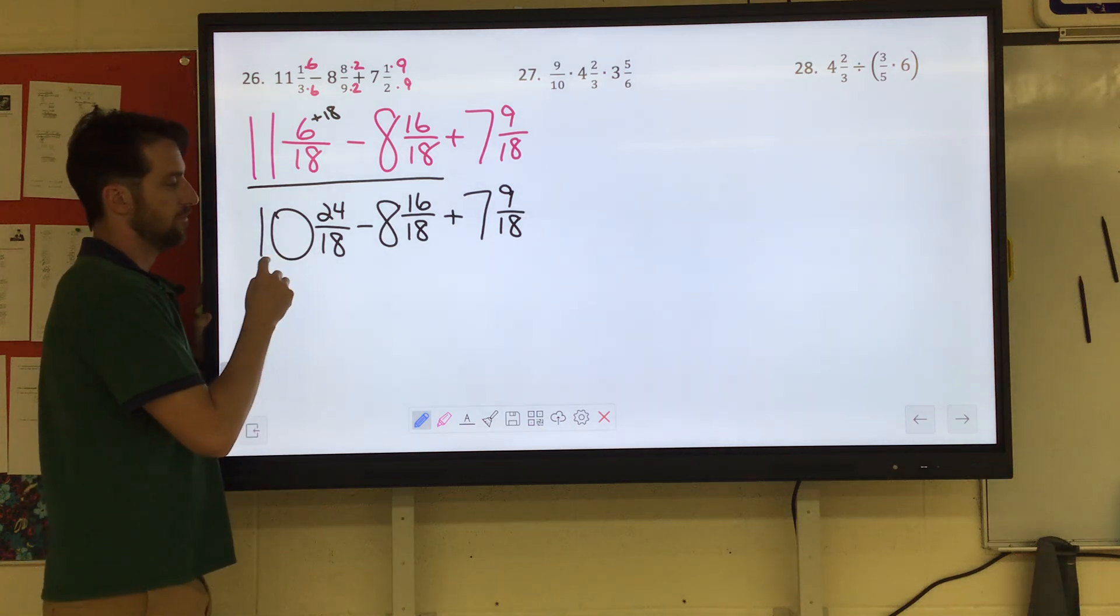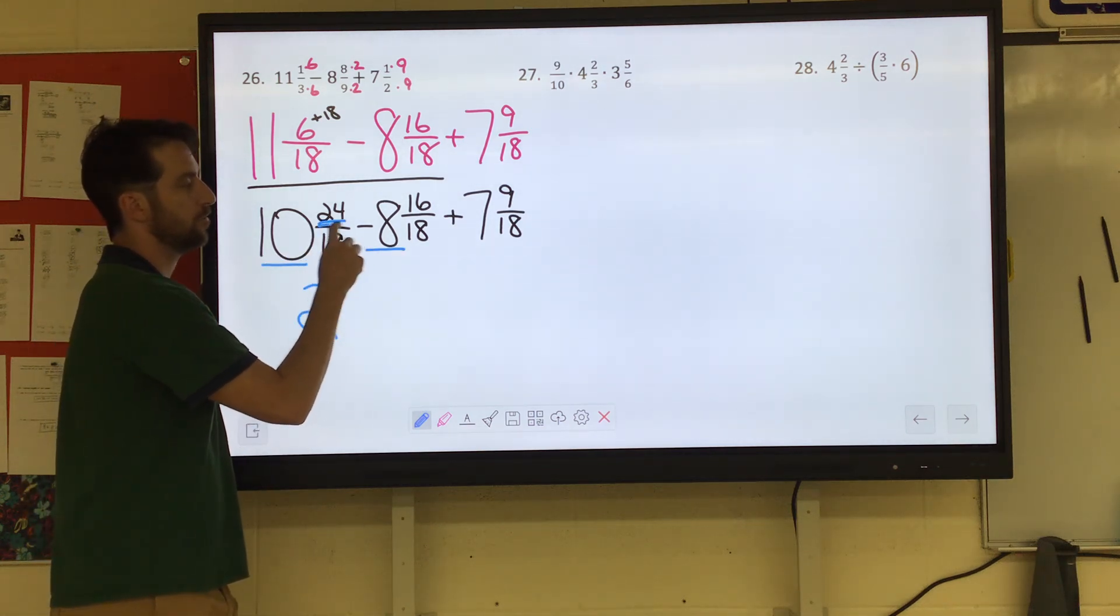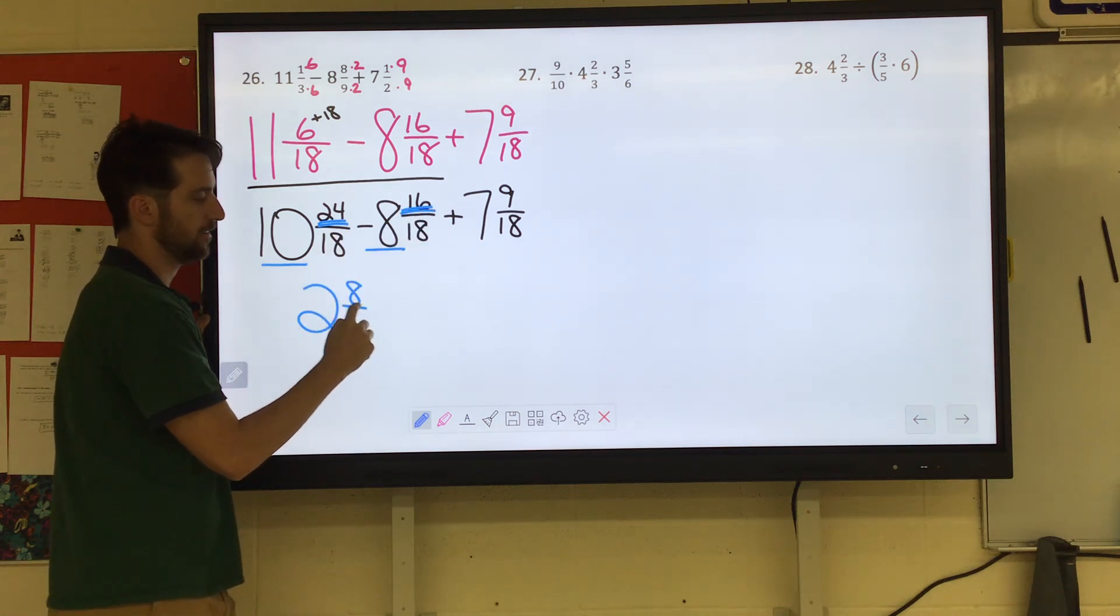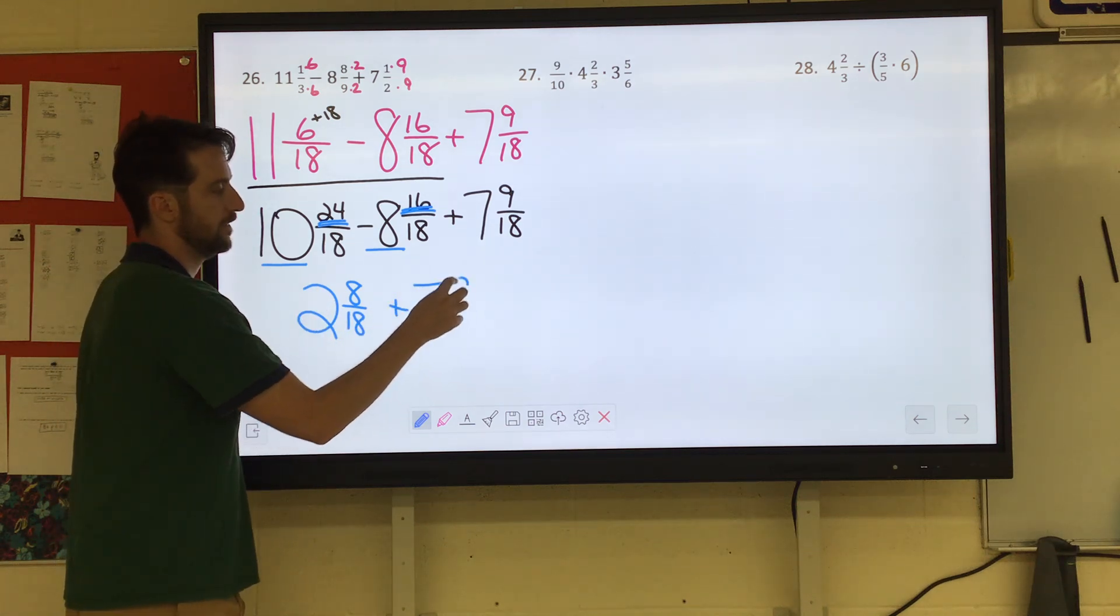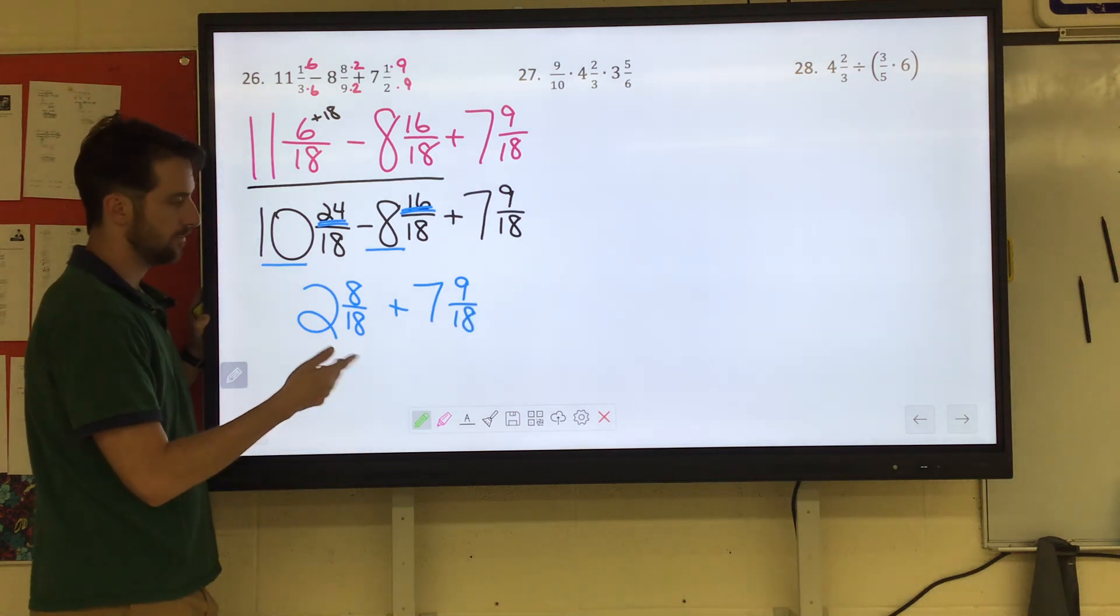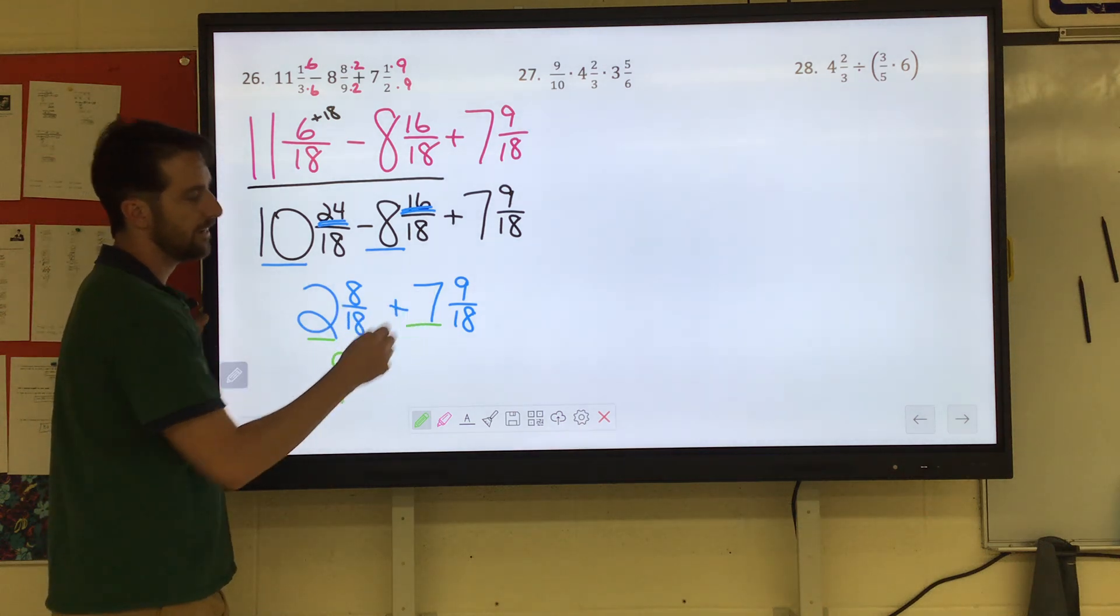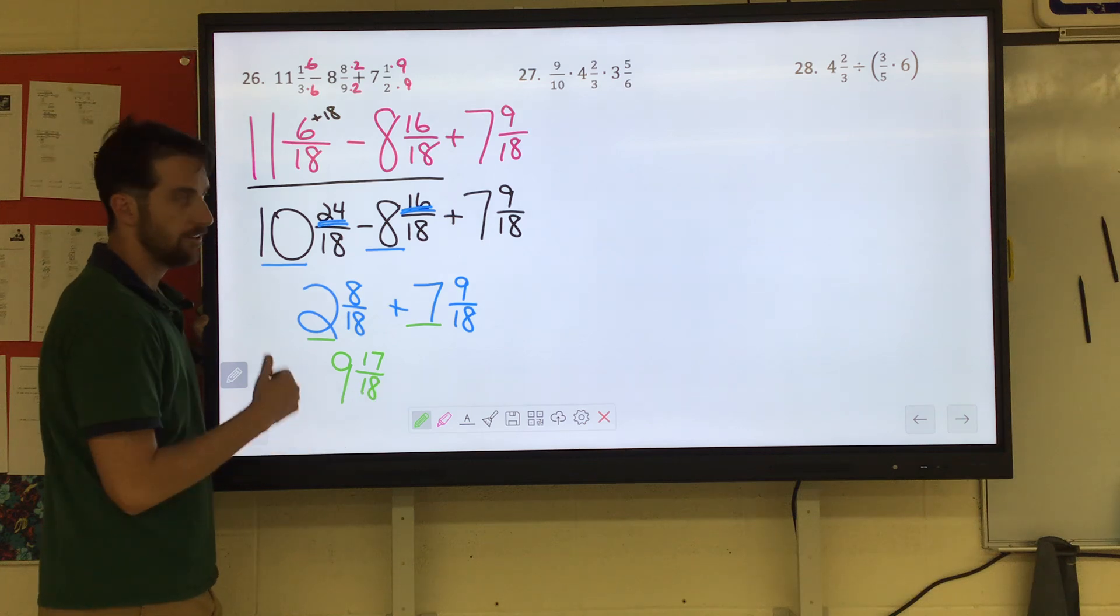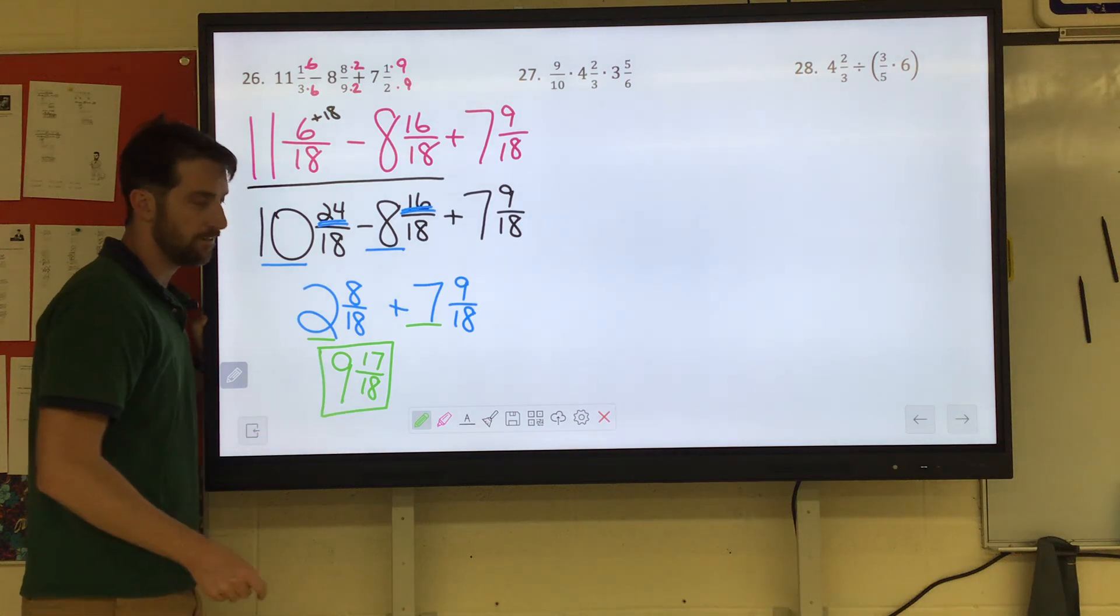So now we can do 10 minus 8 is 2. 24 eighteenths minus 16 eighteenths would leave us with 8 eighteenths. So we have 2 and 8 eighteenths plus 7 and 9 eighteenths. Okay, we can add the 2 plus 7 is 9. 8 eighteenths plus 9 eighteenths would be 17 eighteenths. We check if you can simplify it any more. You cannot. So that would be our final answer.